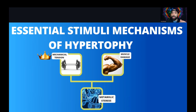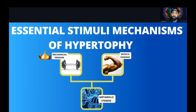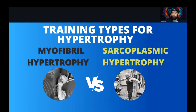Number three is muscle damage — basically where you put stress on the sarcomere, which is the smallest unit of contraction. In plain terms, you're putting stress on the muscle and causing inflammation in those muscle fibers. Moving on, there are two main types of hypertrophy.